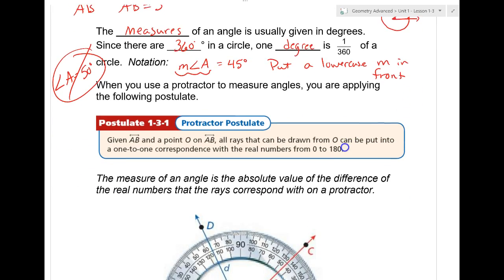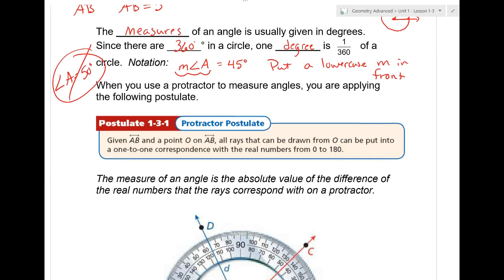Remember something that we had before. We had the ruler postulate. The ruler postulate says that we can make a number line so we can measure things. Guess what a protractor postulate tells you? We can put a protractor together and you can measure angles. That's all we're spending time on that one. Moving on.